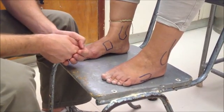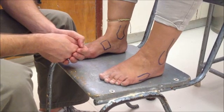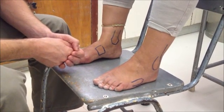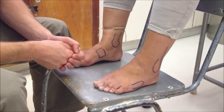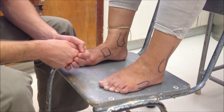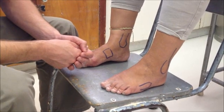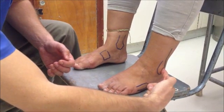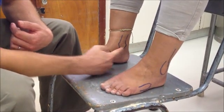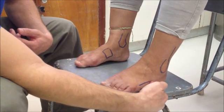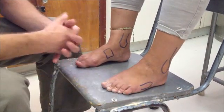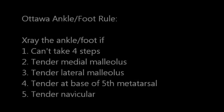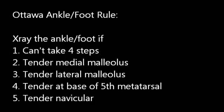In summary, the Ottawa ankle rules state that if a patient with indirect mechanism of injury presents to your unit and they are unable to take four consecutive steps at the site of injury and in your unit, they have to have an X-ray of the ankle and/or foot. When you examine the ankle and the foot more closely, bony tenderness at either the lateral malleolus, the medial malleolus, the navicular, or the base of the fifth metatarsal mandates X-rays of the ankle and foot. And that's it, an overview of the use of the Ottawa ankle and foot rules. Thank you.